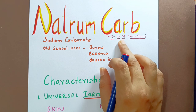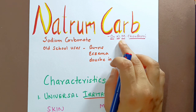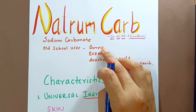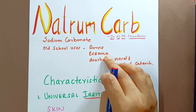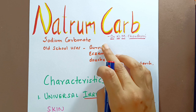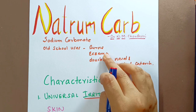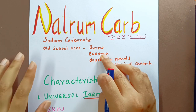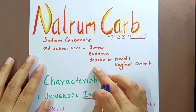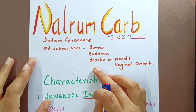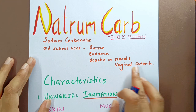Natrium Carb is actually made from sodium carbonate — it is actually common soda, purified. It is one of Hahnemann's great anti-psoric remedies and also a polycrest of very great importance according to Dr. N.M. Chaudhary. He mentions the old school uses: it was used for burns and eczema.